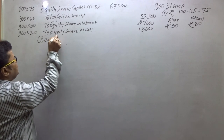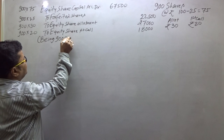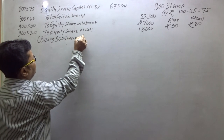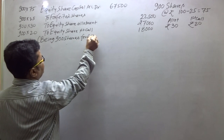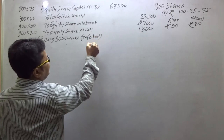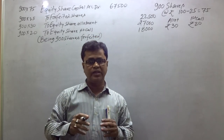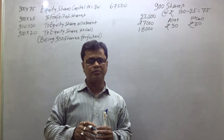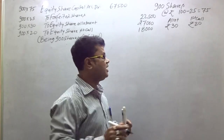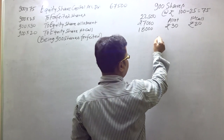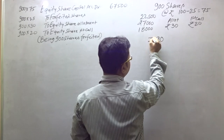Being 900 shares forfeited. When the company reissues these shares, it takes the price of ₹90. So the reissue price is ₹90 per share.